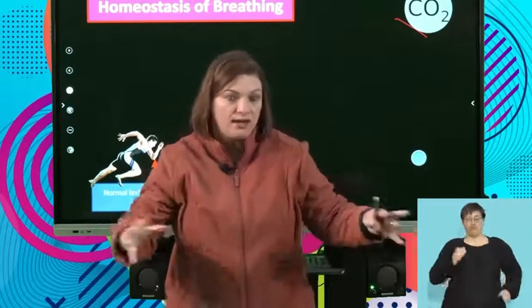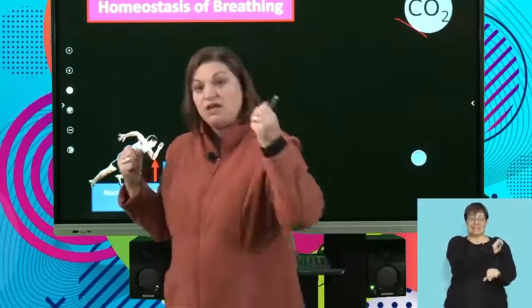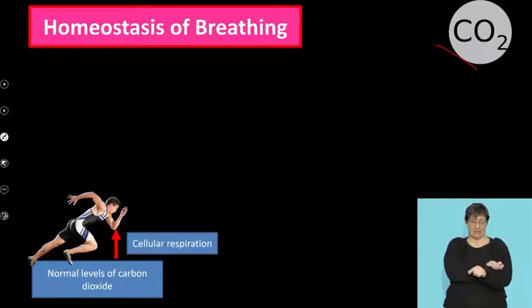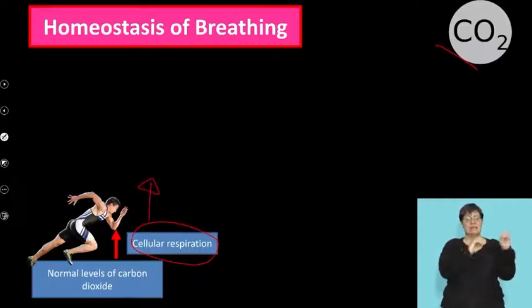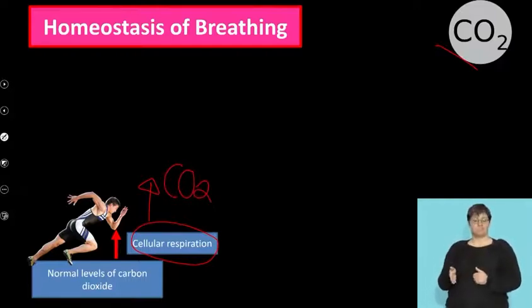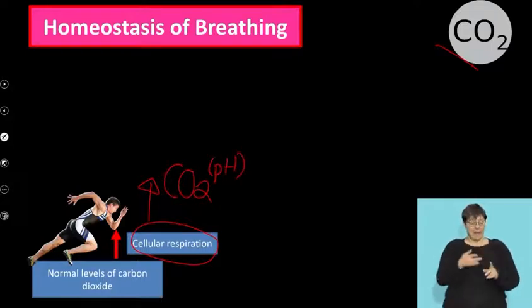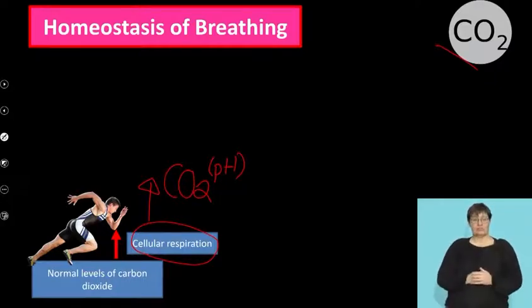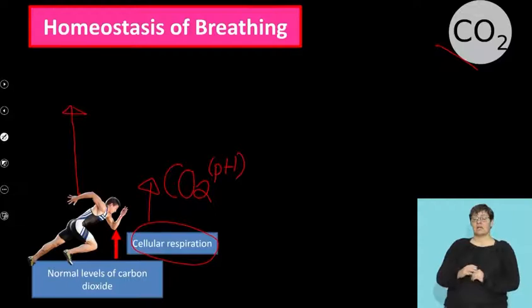Picture this: you've been playing soccer, gone for a run, played netball or rugby. What happens afterwards? You've done all this exercise, so your body needs energy. Cellular respiration increases, and an increase in cellular respiration means there's an increase in carbon dioxide. As I said, carbon dioxide changes the pH of the body — that could be detrimental to the balance. So what does my body do?